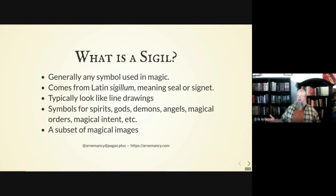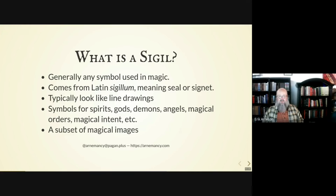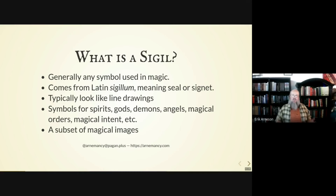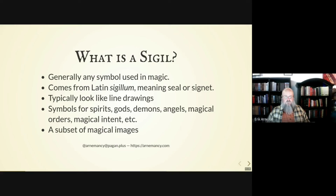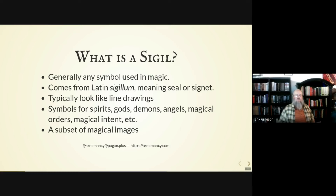So what is a sigil, you might ask? A sigil is generally just sort of any kind of symbol used in magic. It comes from the Latin word sigillum, which means seal or signet. And a lot of sigils, especially Renaissance ones, they kind of look like line drawings.